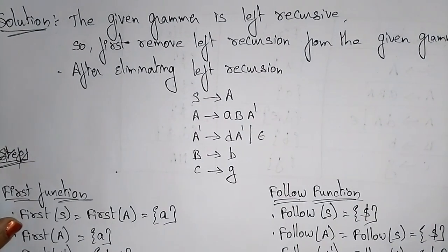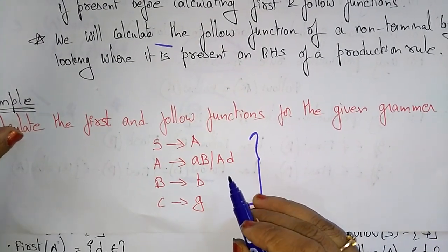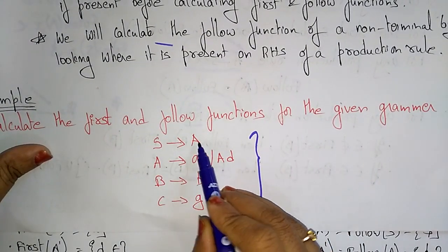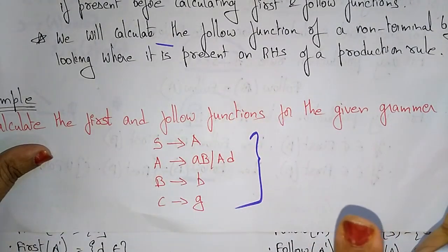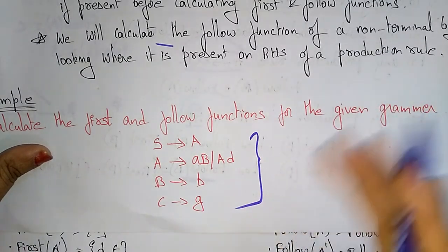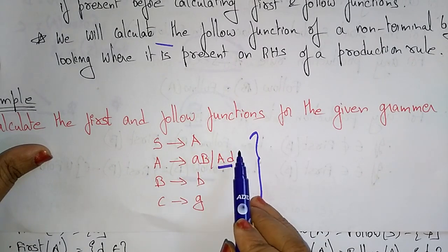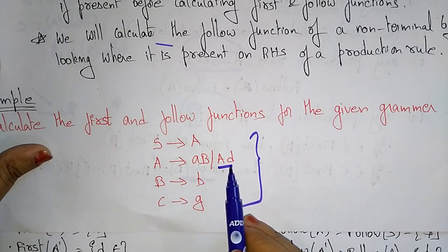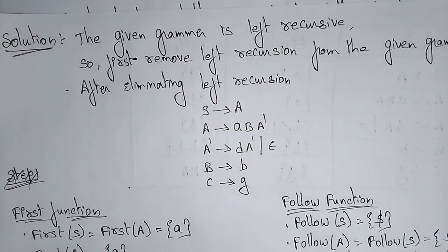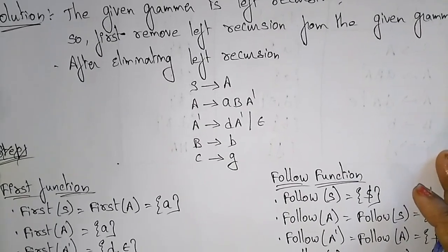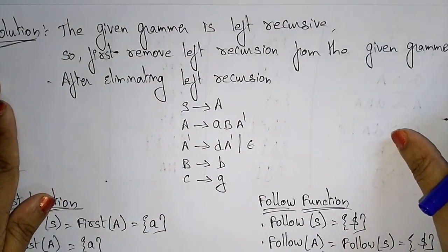The given grammar has a left recursion problem. In place of A you substitute AB, and again in B's place you substitute B, so the function recurses — it goes on recursively. The given grammar has the left recursive problem, so first we remove the left recursion from the given grammar.